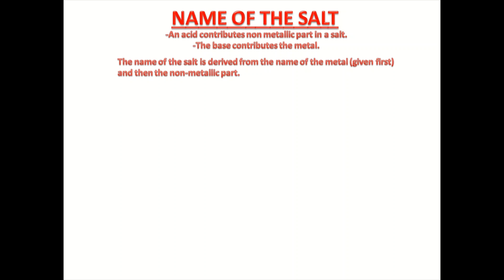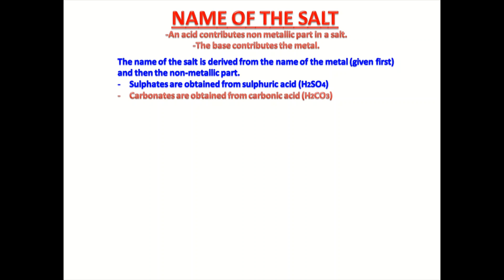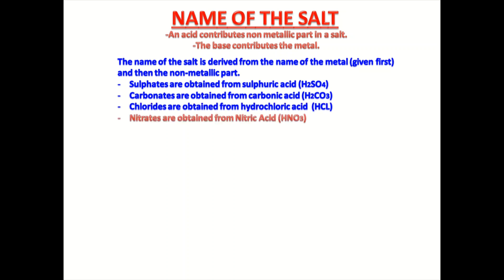As salts are formed with the help of acid and base reaction, the name of the salt is also contributed by acid and base itself. An acid contributes the non-metallic part in a salt and the base contributes the metal part. The name of the salt is derived from the name of the metal given first and then the non-metallic part. Like, sulfates are obtained from sulfuric acid H2SO4, carbonates from carbonic acid H2CO3, chlorides from hydrochloric acid HCl, nitrates from nitric acid HNO3, and acetates from acetic acid CH3COOH.